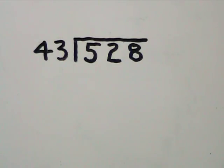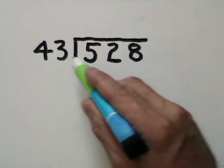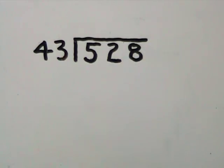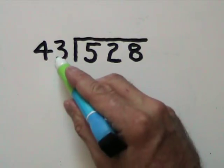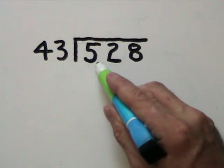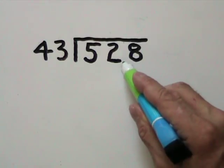Our 2 by 3 division problem is 528 divided by 43. When we have a two-digit divisor, we're going to be using at least the first two digits in our dividend to begin with.